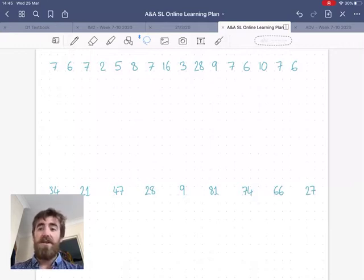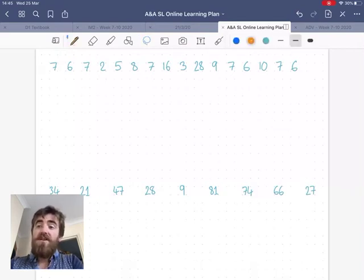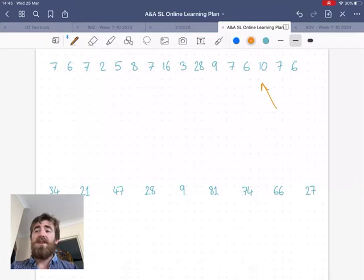That means how spread out the data is. If we look at the first list up there, to find the range we just do 28 minus 2, and we get 26.